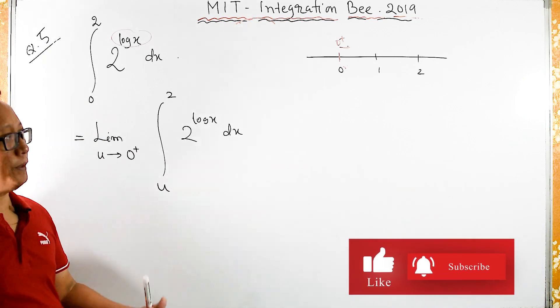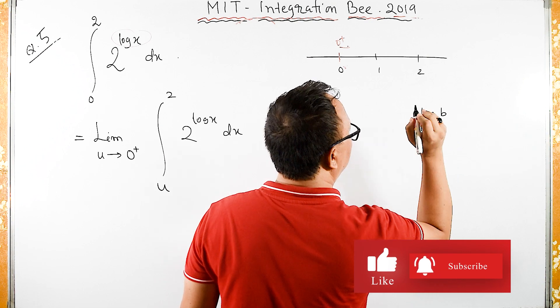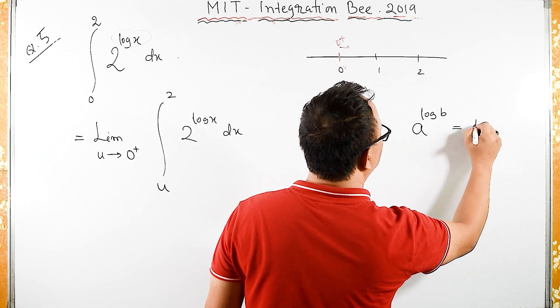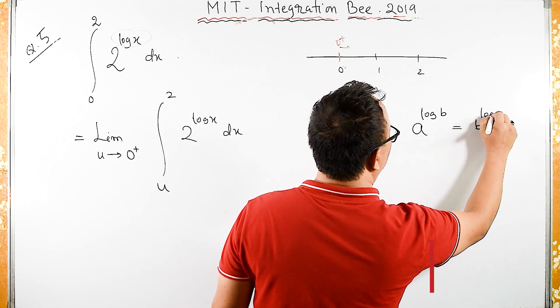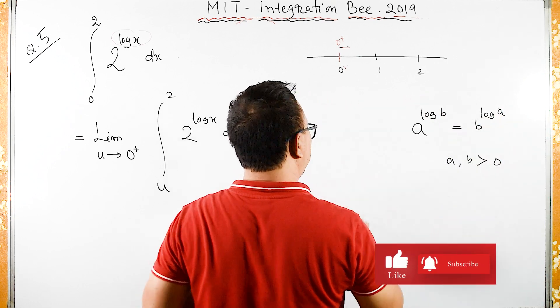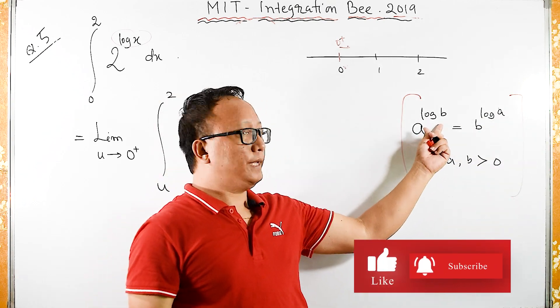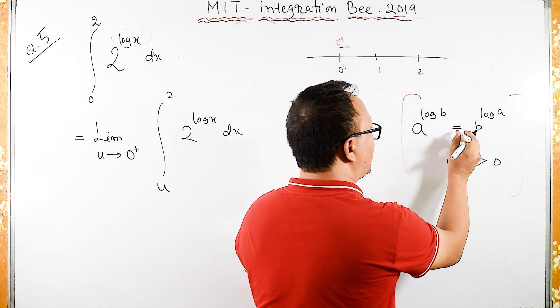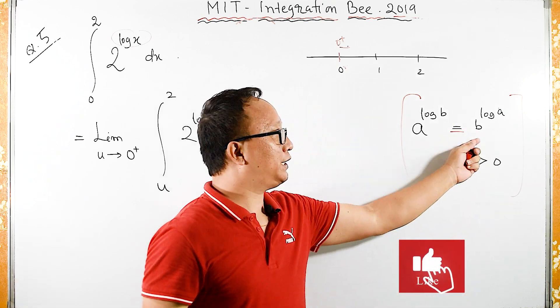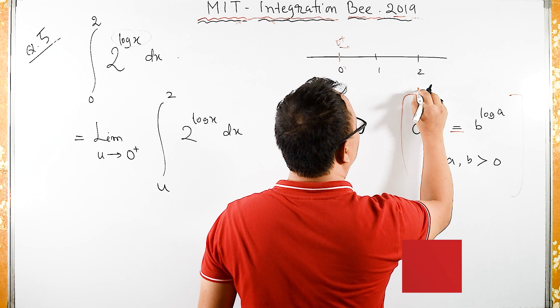We have one logarithmic property: a raised to log of b is same as b raised to log of a, where a and b should be strictly greater than 0. This is a property of logarithms.